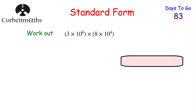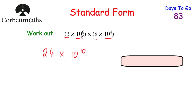Now let's look at multiplying numbers in Standard Form — this is a non-calculator question. For 3 × 10⁶ × 8 × 10⁴: first multiply the front numbers, 3 × 8 = 24. Then use laws of indices: 10⁶ × 10⁴ = 10^(6+4) = 10¹⁰. So we get 24 × 10¹⁰. But 24 isn't between 1 and 10, so we make it 10 times smaller: 2.4, and increase the power by 1 to get 2.4 × 10¹¹.